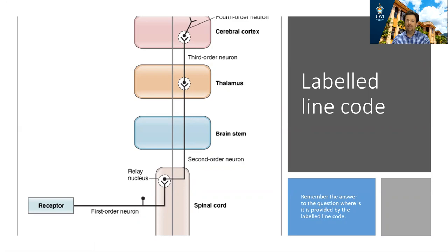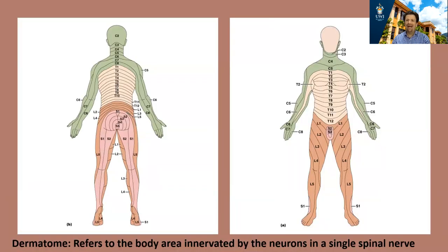As we discussed, we answer where is it according to the labeled line code. This gives us a pattern on the body called dermatomes, as you can see in this diagram. The dermatome refers to the body area innervated by the neurons for a single spinal nerve. There are several spinal nerves emerging from the spinal cord going to different parts of the body, and each spinal nerve is responsible for innervating a different portion of the skin. Understanding where each spinal nerve goes gives you a sense of the distribution across the entire body.